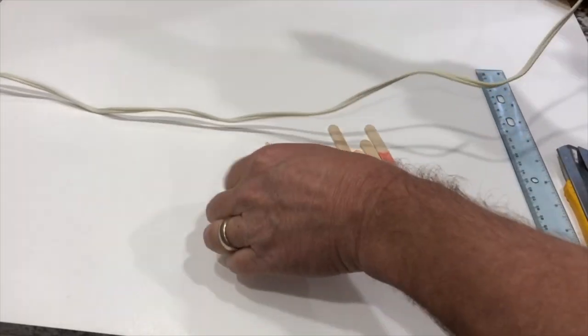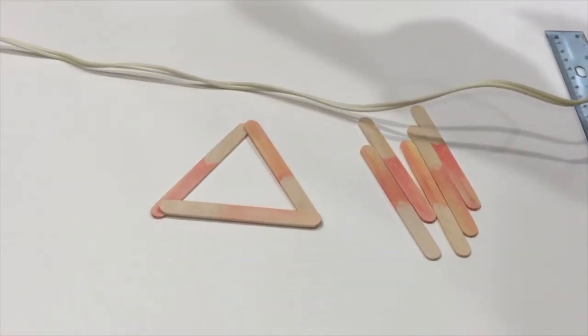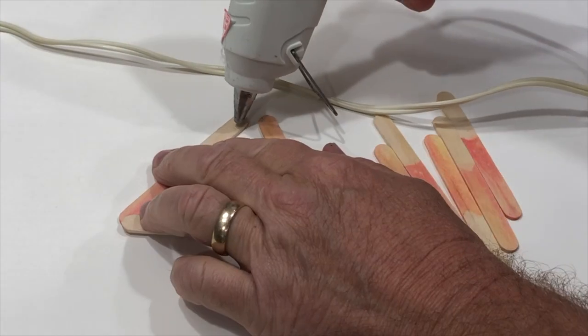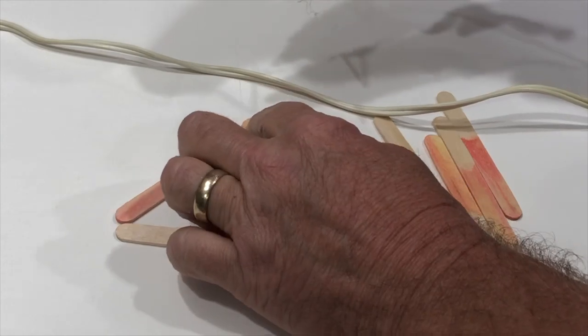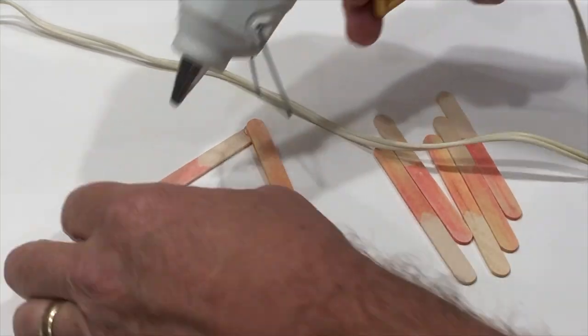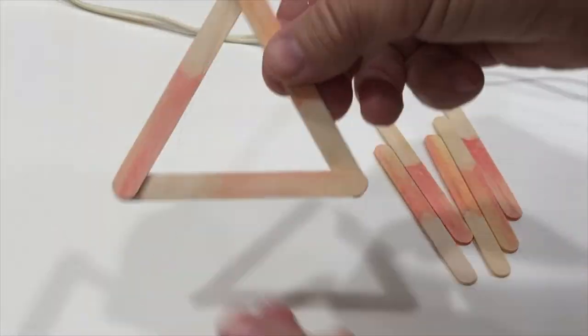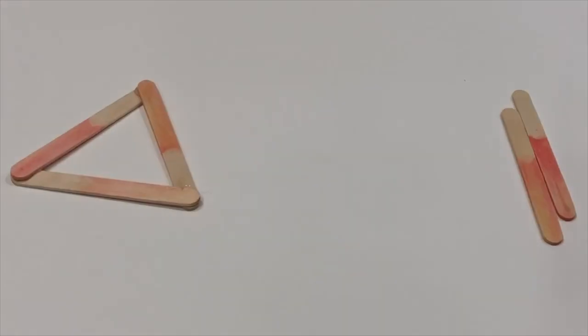We're going to start with the first step. Take six of the popsicle sticks and the hot glue gun. Be very careful, adult supervision, as the glue is very hot. You're just going to make two triangles. It doesn't matter what part of the popsicle is on top or bottom. Once you get both your triangles done, it should glue pretty quick with the hot glue gun.